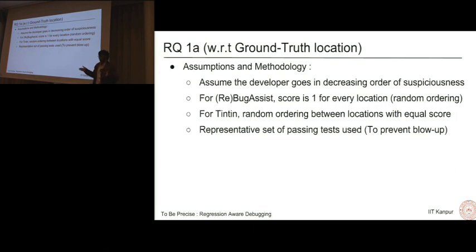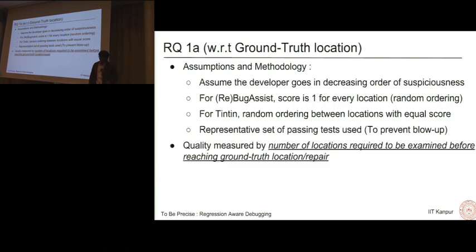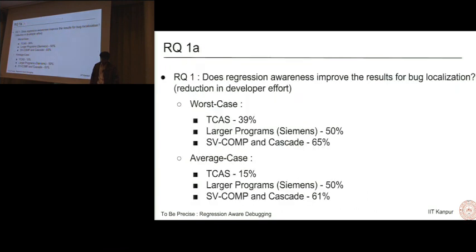A representative set of passing tests is used to prevent blow up. For TCAS, say you have around 1000 passing test cases. If you use all of them, you extract interpolants from all of them, your formula is gonna grow quite large. So we use a representative set using code coverage and related metrics. So we bring it down to say 10 or 20. We measure quality by the number of locations that were required to be examined by the developer before reaching the ground truth location. This in some sense captures the amount of developer effort involved. These are the results. Let me explain what worst case and average case are. The worst case indicates the situation where the developer finds the actual ground truth fix at the very end of the ordering. He was very unlucky in going through that particular set and he found it at the last. And the average case, it's just the statistical average, he'll find it around the middle.